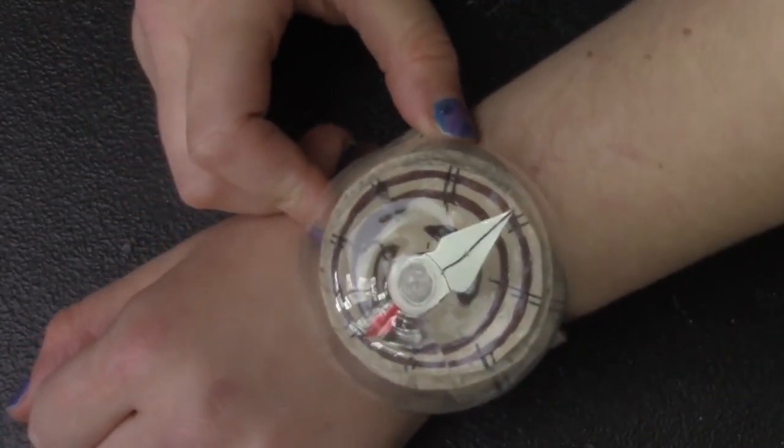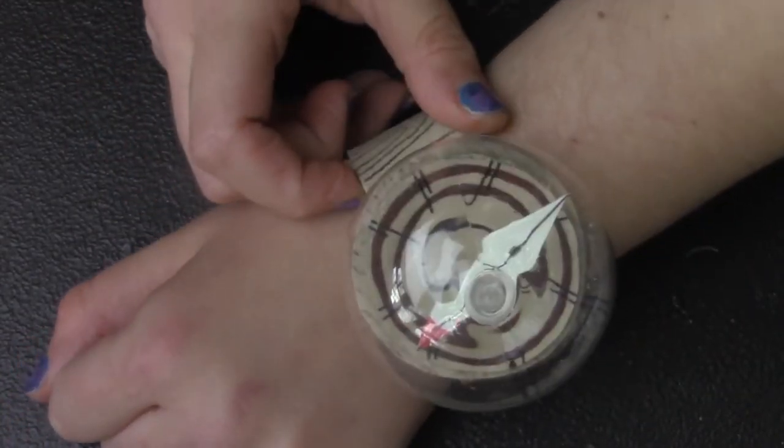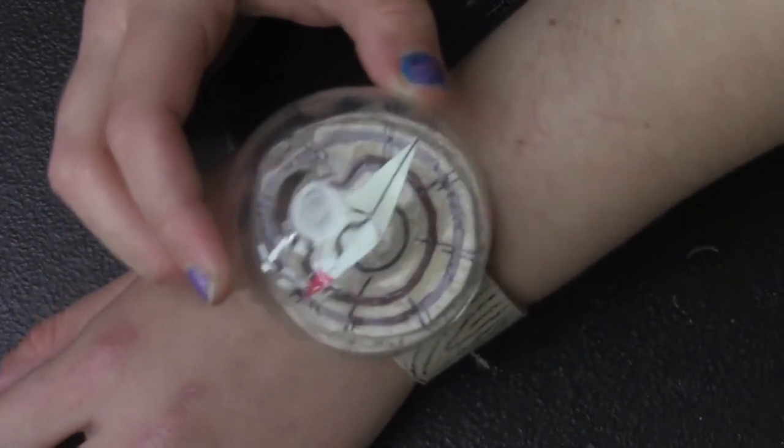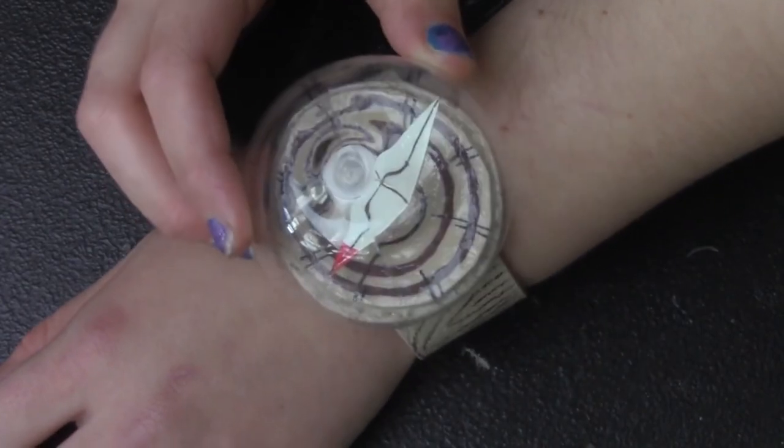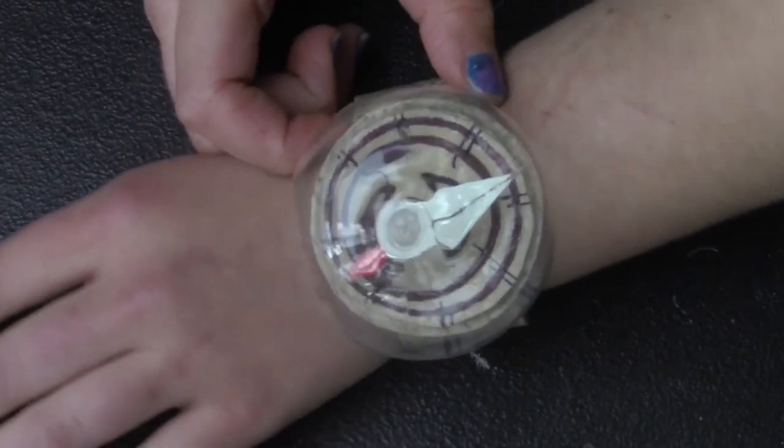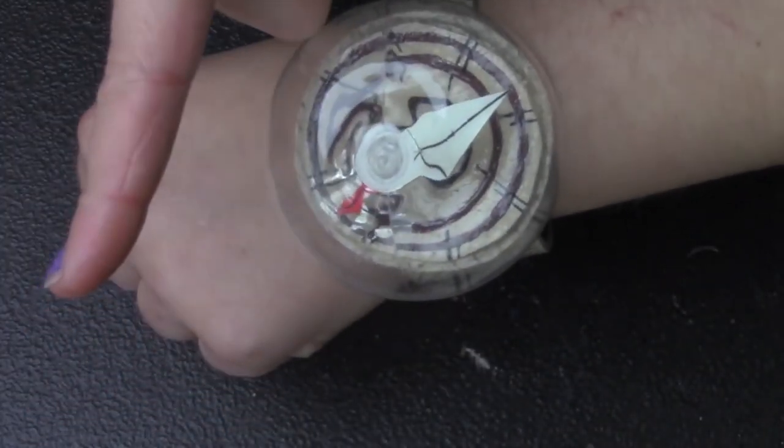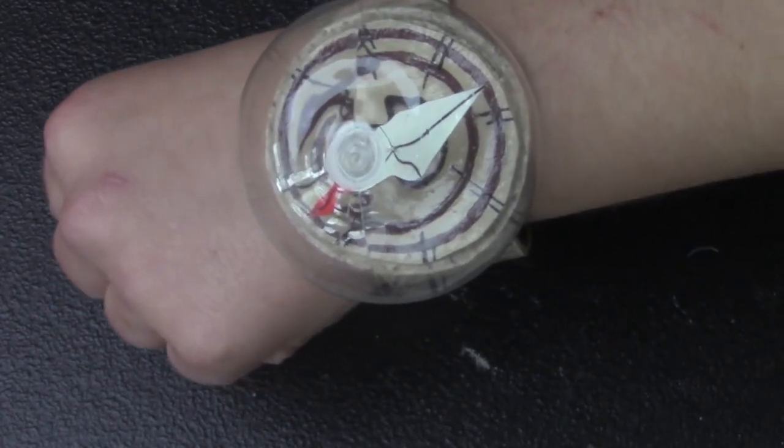And you're done, and with any luck, your pointer piece should move around as you walk like mine does. Just don't try using this when you're actually navigating a boat because it does not have the magnetic components it needs to actually work like a compass. I cannot be held accountable if you get lost. But now you have an awesome piece if you're doing a Nami cosplay or just because you really like One Piece.